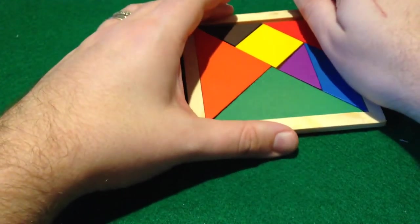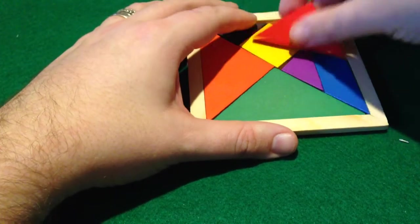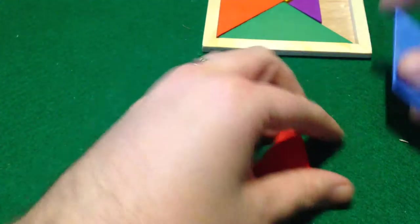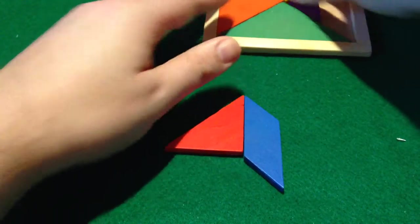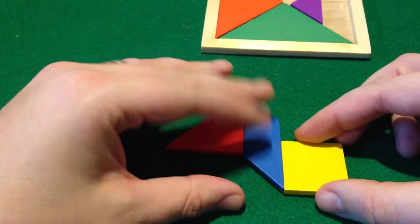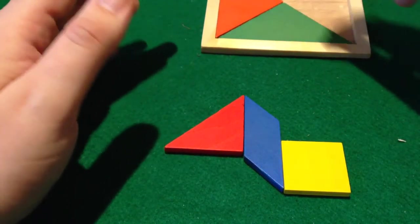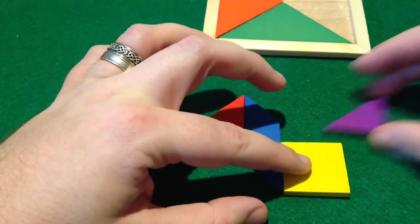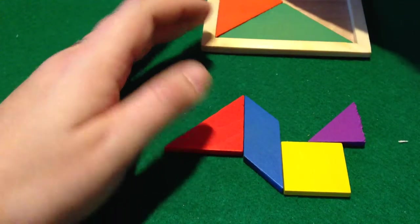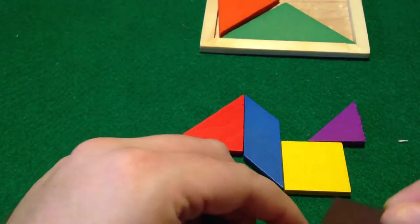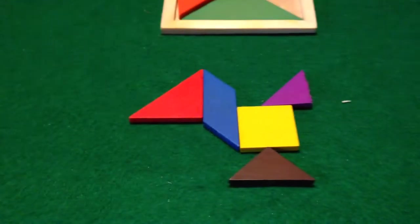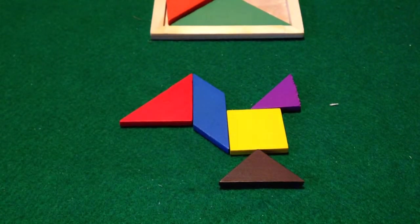And the idea of a Tangram is that you try to make different shapes. So like, for example, somebody might say a duck, and let's see if I can make anything vaguely resembling a duck. There we go, that's a bird anyway.